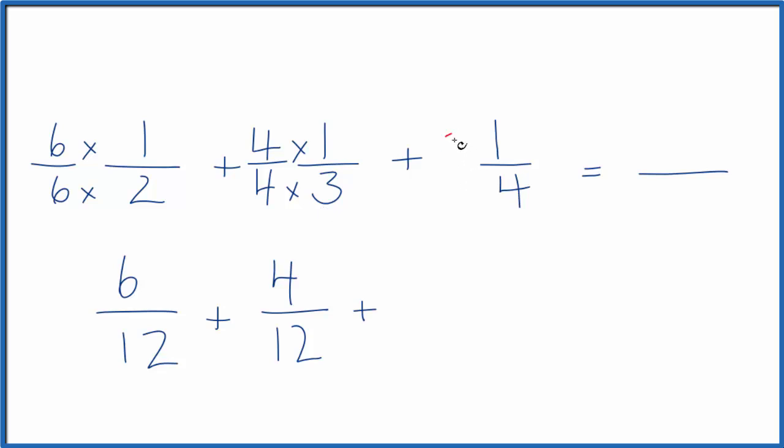Finally here, I'm going to multiply by three over three. Three times one is three. Three times four is twelve. And now we can just add these up. Six plus four, that's ten. Plus three is thirteen. We end up with thirteen-twelfths.